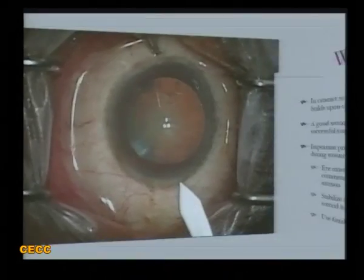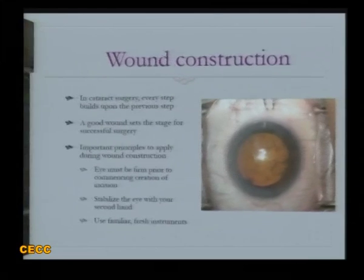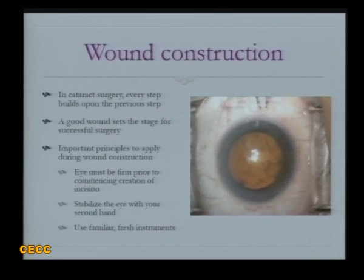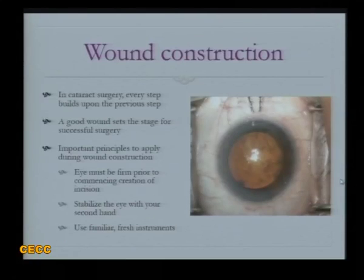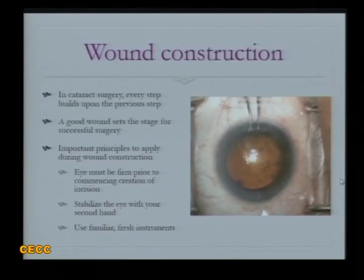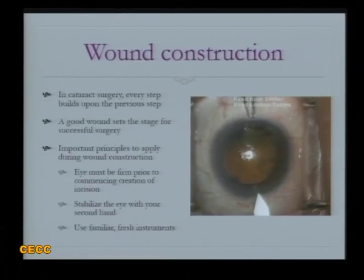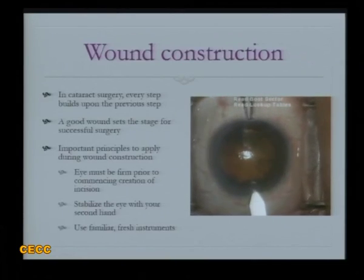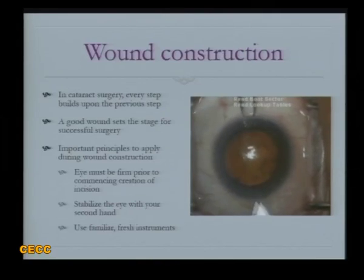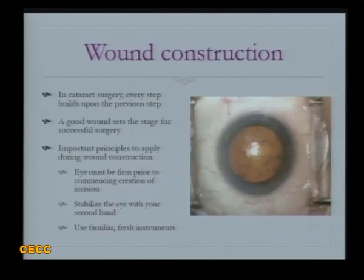Wound construction is one of the most important steps of phacoemulsification surgery. A good wound will set the stage for a successful surgery. Important principles: the eye must be firm prior to commencing the incision, we have to stabilize the eye on the opposite axis with the other hand, and we must use familiar and fresh instruments.